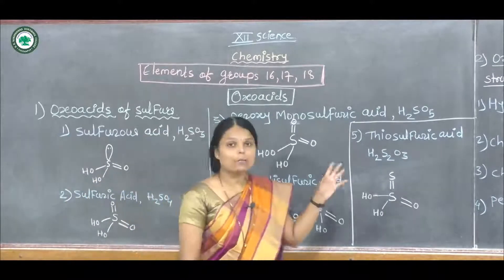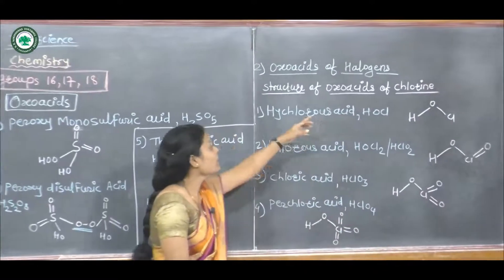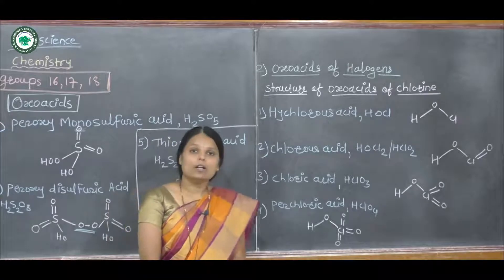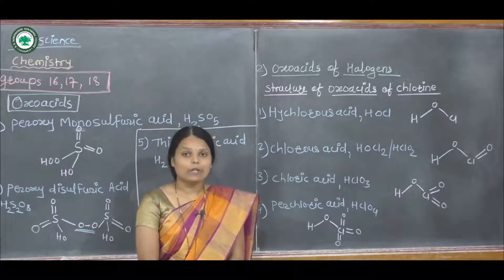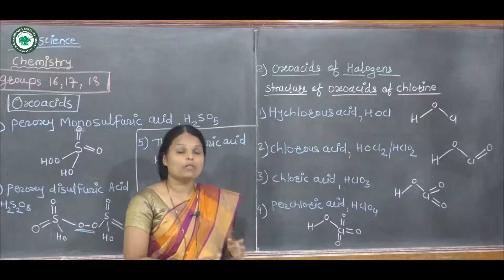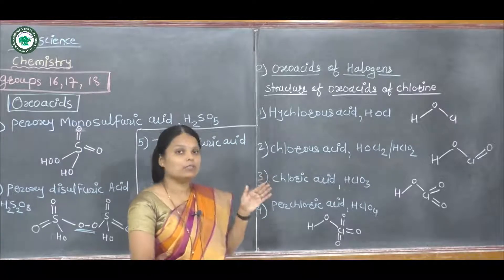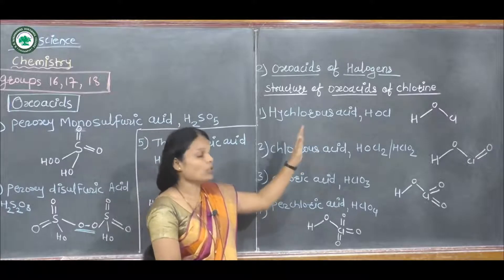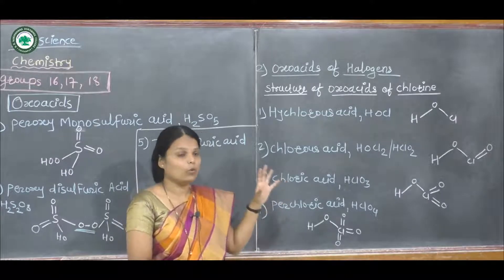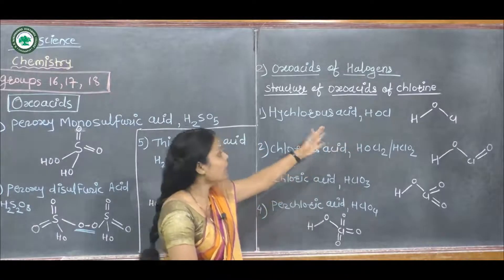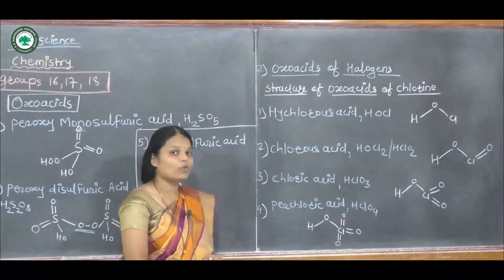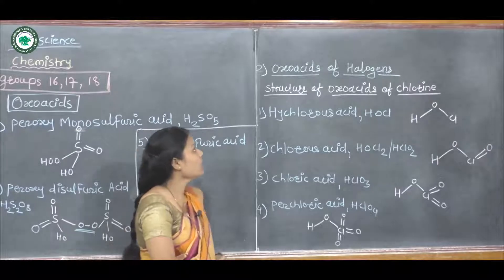The second part is the oxoacids of halogen. The halogens are group 17 elements, which include fluorine, chlorine, bromine, iodine, and astatine. These halogens react with oxygen to form new compounds called oxoacids of halogens. For example, we can take chlorine, so these are the oxoacids of chlorine. We can also take any halogen such as bromine or iodine.